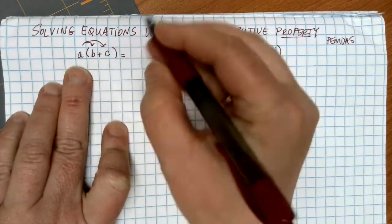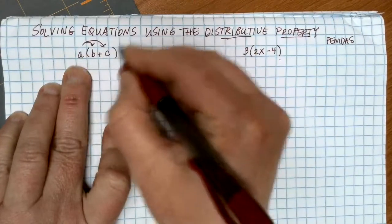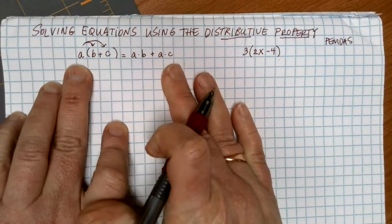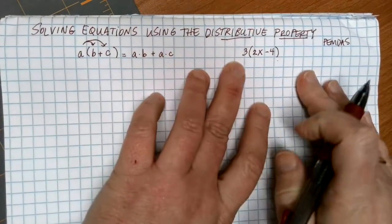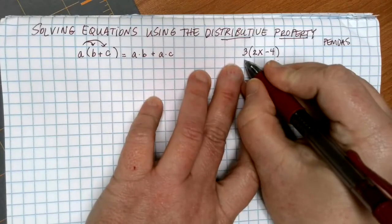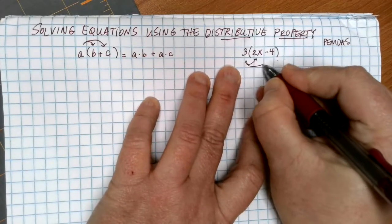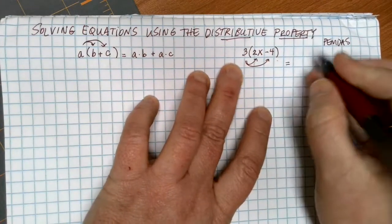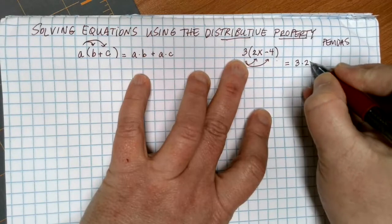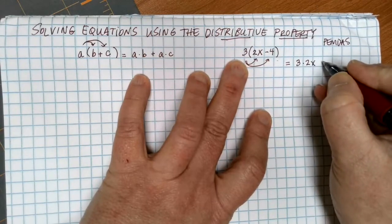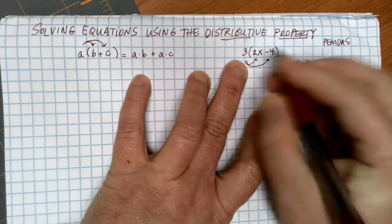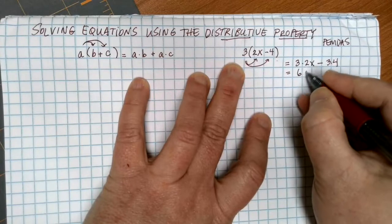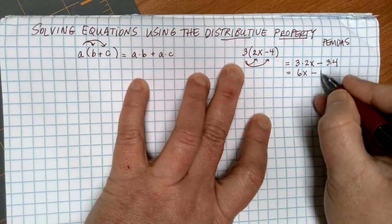So in the general form, I can multiply a times b, and I can multiply a times c and add those together. That is the distributive property. If we apply the distributive property here, the 3 outside is being multiplied, so I can get rid of the parentheses by multiplying that 3 by each thing inside. I'll do 3 times 2x, minus 3 times 4. 3 times 2x gives me 6x, minus 3 times 4 gives me 12.